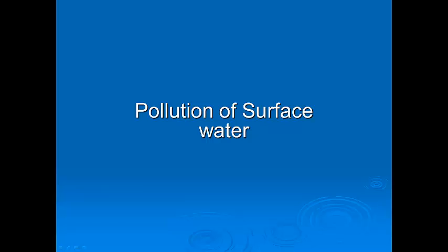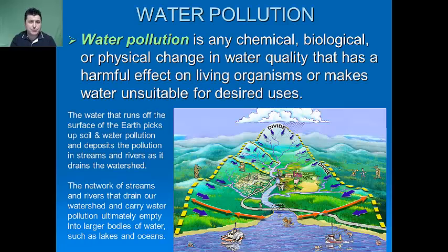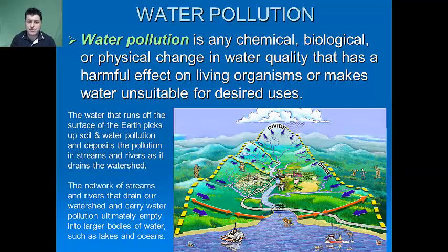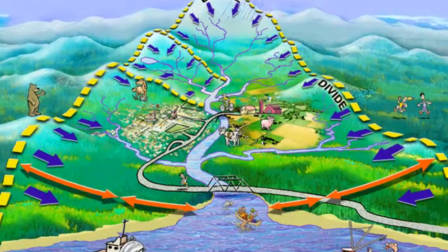Hello and welcome to Dove Biology Apes Lessons To Go. This video will be exploring the pollution of surface water. Water pollution is defined as any chemical, biological, or physical change in water quality that has a harmful effect on living organisms or makes water unsuitable for desired uses. The water that runs off the surface of the earth picks up soil and water pollution and deposits that pollution in streams and rivers as it drains the watershed — the network of streams and rivers that carry water pollution ultimately into larger bodies of water such as lakes and oceans.